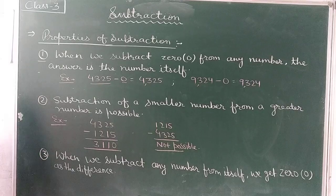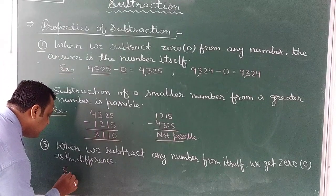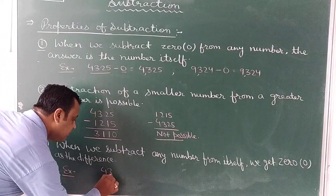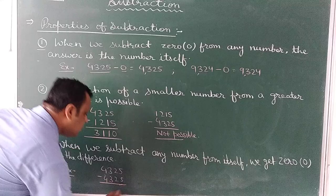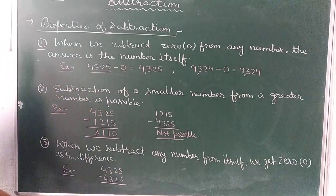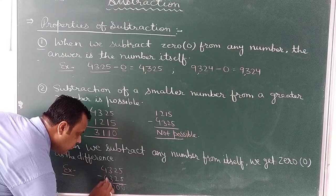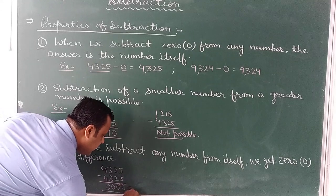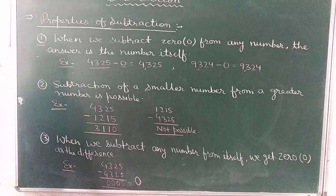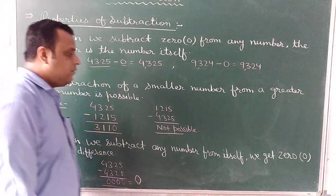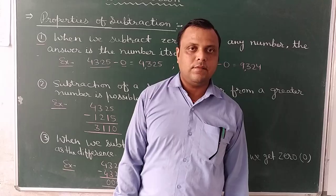Property 3: when we subtract any number from itself, we get 0 as the difference. For example, 4,325 minus 4,325: 5 minus 5 is 0, 2 minus 2 is 0, 3 minus 3 is 0, 4 minus 4 is 0, so the answer is 0. When any number is subtracted from itself, the difference is 0. That is all about subtraction and its properties. Thank you, and have a nice day.